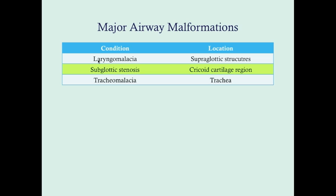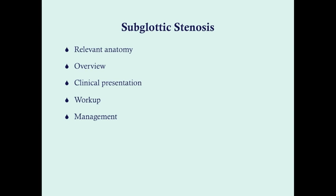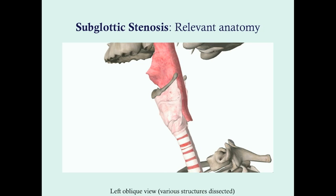Laryngomalacia affects superglottic structures — above the vocal cords — while tracheomalacia is a malformation of the trachea. We'll go over relevant anatomy, how subglottic stenosis typically presents, how to work it up, what your differential diagnosis will be, and how we manage it.